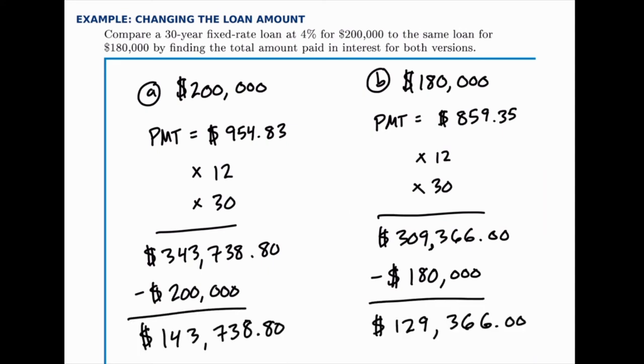So by borrowing less money, not only do you save on the amount of principal you pay back, you actually also save on the interest. There's a difference of about $14,000 in interest in addition to the $20,000 difference in the loans. So by borrowing less at the beginning, there's less interest that will be added on over time, so you can save in both ways.